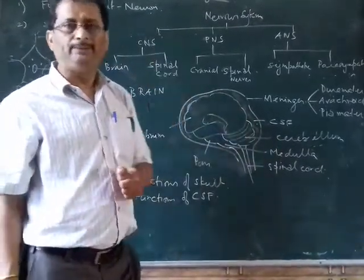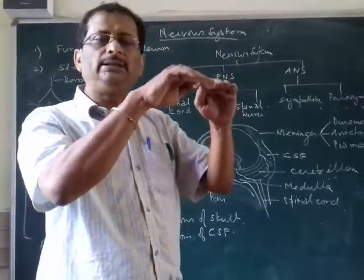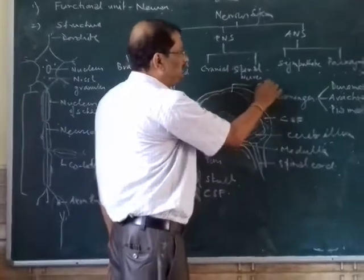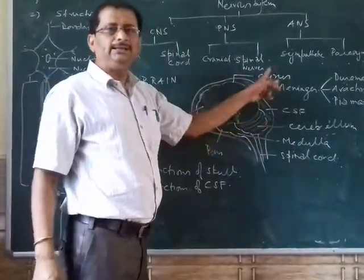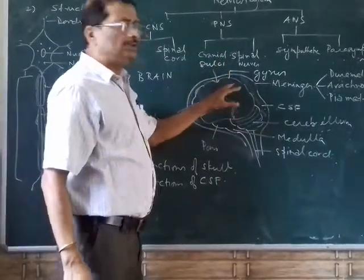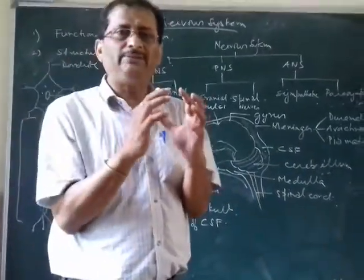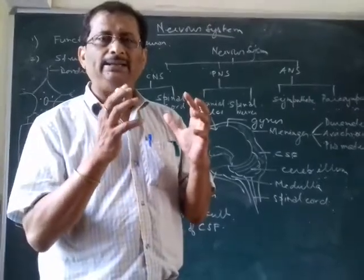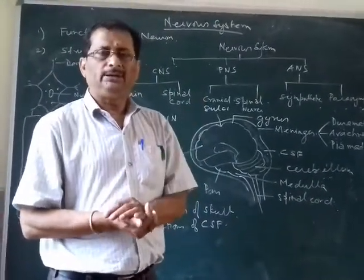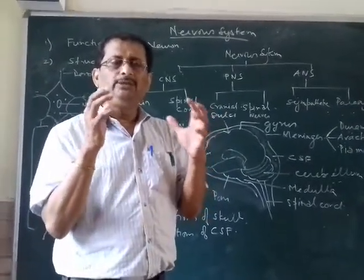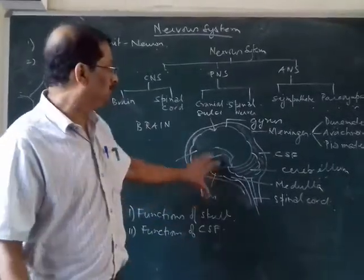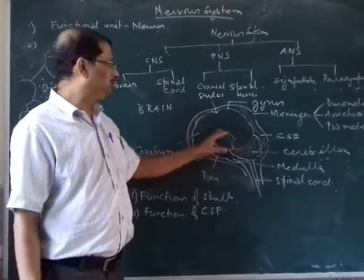The brain is highly convoluted. Convolution means there are ups and downs — some places it is raised, some places it is depressed. The raised portions are called the gyrus (singular) or gyri (plural). Why is there convolution? Because convolution increases the surface area. The human brain weighs more than 1.35 kg. It contains an innumerable number of neurons, and the more neurons, the more efficient is the brain. To increase the surface area for these neurons, this type of convolution is present.